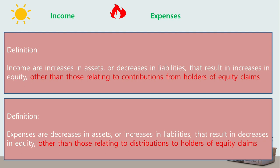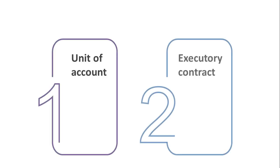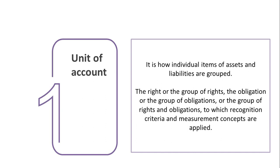So there we have the five elements of the financial statements: assets, liabilities, equity, income, and expenses. Before we conclude this chapter, let us talk about two additional concepts mentioned by the framework: the unit of account and executory contracts. Simply put, let's imagine a unit of account as the grouping of assets and liabilities for financial reporting purposes to which the recognition criteria and measurement concepts are applied.